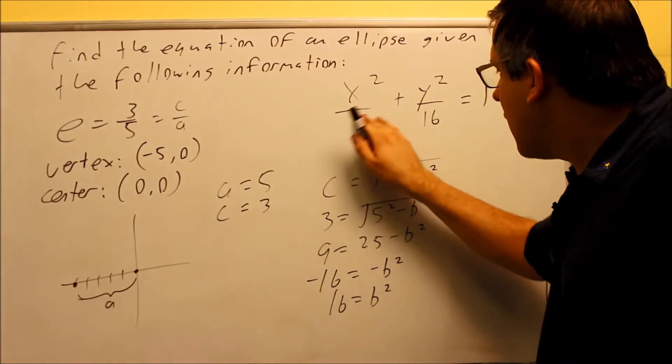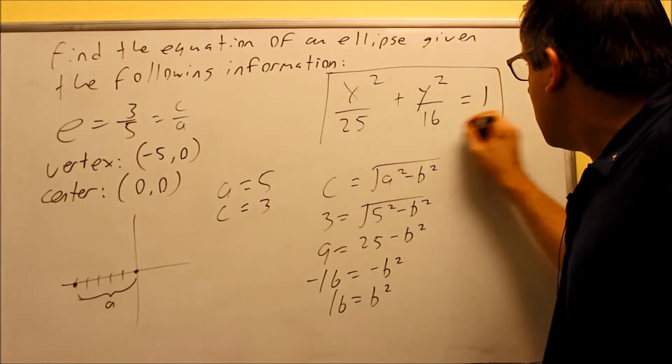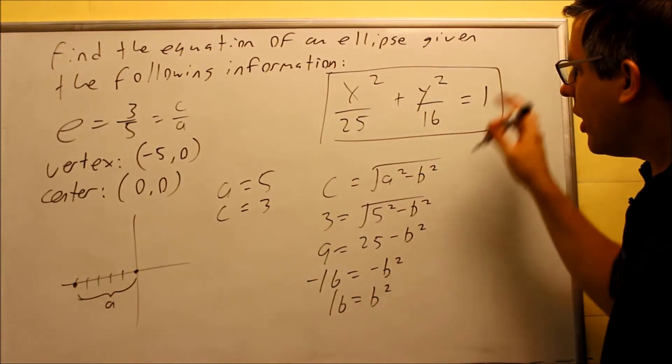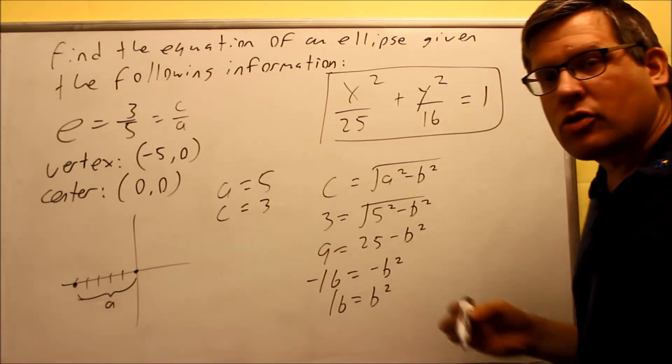b squared is 16, so I'm going to take out the b squared and put in 16 for that one. My a is 5, a squared is going to be 25. So now this right here would be the equation for the ellipse. And again, it has all these characteristics here that was provided.